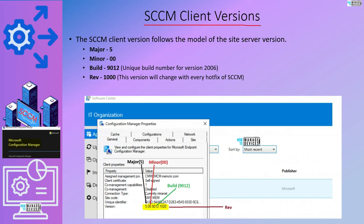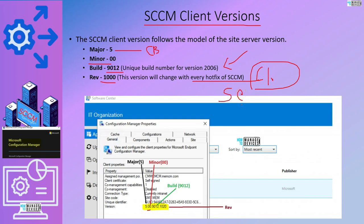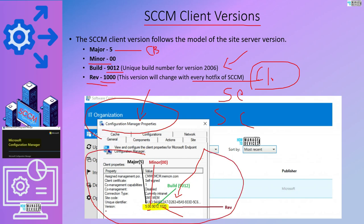It is important to understand the client version details. The client version follows the same pattern and structure. The major version is common for all current branch releases. The minor version is most of the time 00. The build number changes for every release of Configuration Manager, and the revision number also changes frequently for every hotfix related to the SSCM client. Some hotfixes are only applicable for the server component of SSCM — in that case the revision number for the client won't change. If a hotfix is applicable for both server and client, then the revision number will change. You can find the client version by going to Control Panel, searching for Configuration Manager, opening the Configuration Manager applet, and viewing the client version there.